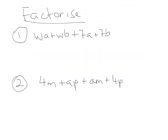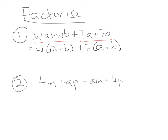Have a quick go at these two questions. Pause the video, try it in your copy, and then play the video at the end. For the first one: is it type 1? No. It has to be type 2 — it's a gang of 4. The first two terms have a w in common: w bracket a plus b. The last two terms have a 7 in common: 7 bracket a plus b. The two brackets are identical, so we rewrite the terms in front into one bracket: w plus 7, multiplied by a plus b. Job done.